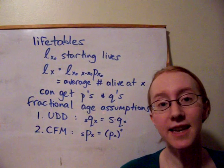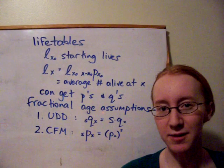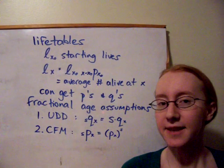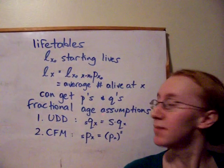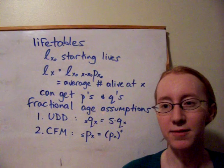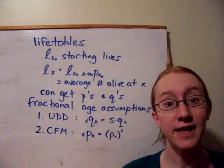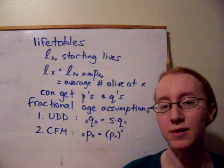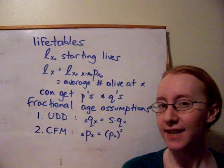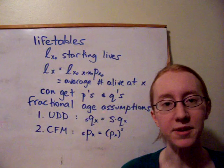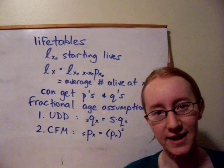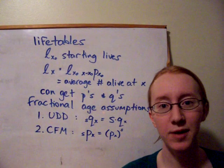Each LX for each integer age X in the future is obtained by taking LX0 times X minus X0 PX0. So we're looking at the number of lives starting off at age 0 times the probability that those lives survive to age X. We can interpret LX as the average number of lives out of those initial LX0 starting lives that make it to age X.